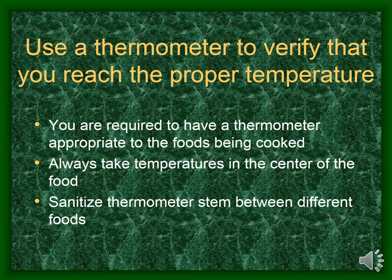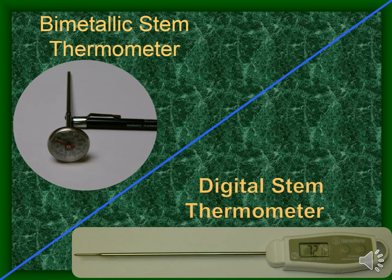To verify cooking temperatures, you must use a thermometer. You are required to have a thermometer appropriate to the foods that you are cooking. You must always take the temperature in the center of the food where it is the coldest, and you want to clean and sanitize the thermometer stem before checking the temperature of food, and in between checking the temperatures of different pieces of food. Thermometer examples include bimetallic stem thermometers and digital stem thermometers. Bimetallic stem thermometers are useful for checking the temperatures of large pieces of food where the temperature is similar throughout. Digital stem thermometers are appropriate for taking temperatures in a wide variety of foods.